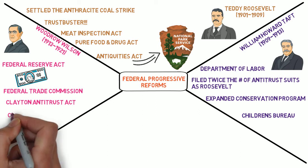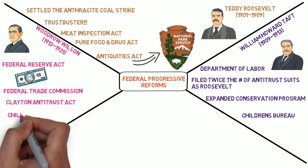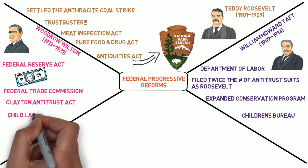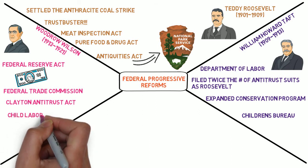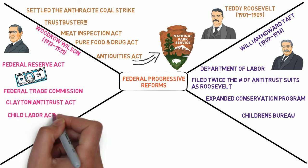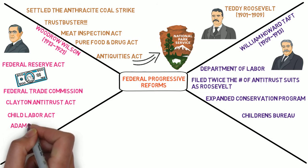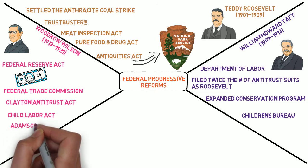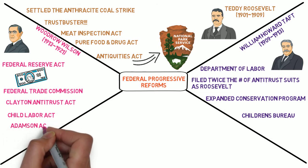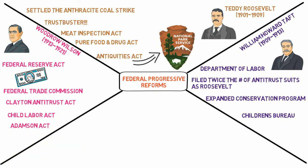Wilson also signed the Child Labor Act in 1916. This act outlawed the interstate commerce of any goods produced by child laborers, and the Adamson Act established an eight-hour workday for the American railroad worker.